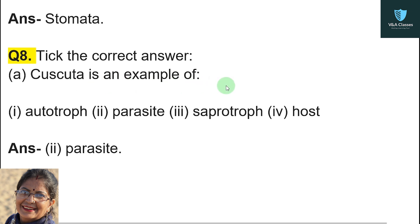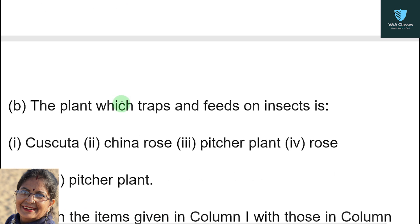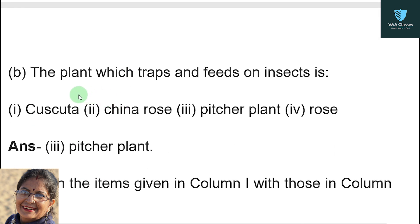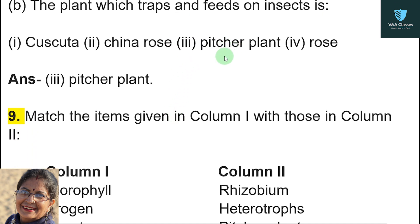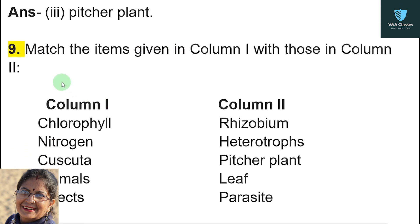Question number eight — tick the correct answer: Cuscuta is an example of a parasite — tick the second option. The plant which traps and feeds on insects is pitcher plant — tick the third option.